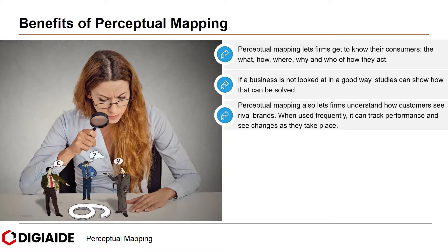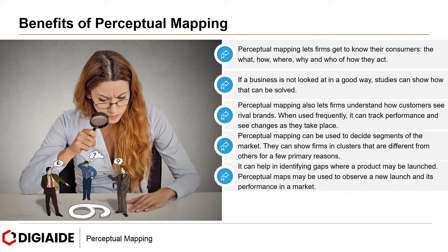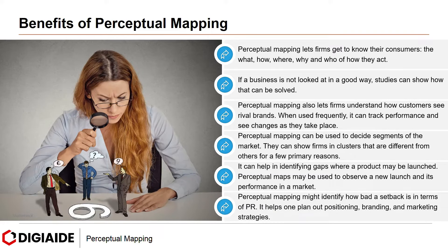Perceptual Mapping also lets firms understand how customers see rival brands. When used frequently, it can track performance and see changes as they take place. Perceptual Mapping can be used to decide the segments of the market, showing firms in clusters different from others. It can help in identifying gaps where a product may be launched. Perceptual Maps may also be used to observe a new launch and its performance in a market, identify how bad a setback is in terms of PR, and help one plan out positioning, branding, and marketing strategies.